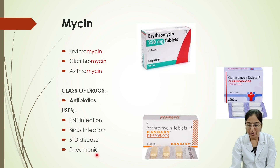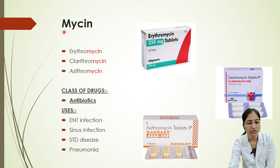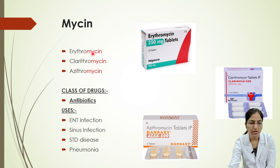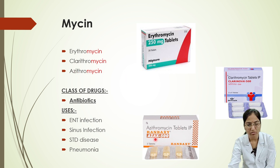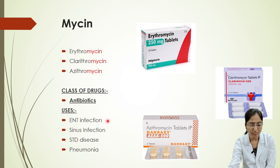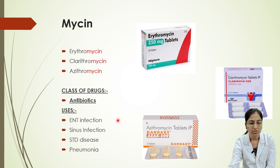Next, we'll look at drugs whose names end with '-mycin'. Examples include erythromycin, clarithromycin, and azithromycin. These belong to the class of antibiotics, and they are prescribed for ENT infections, sinus infections, sexually transmitted diseases, and pneumonia.